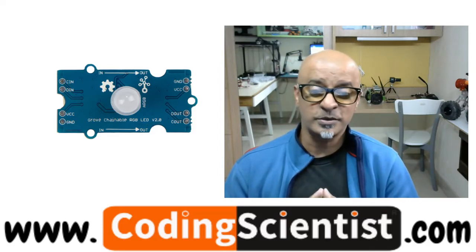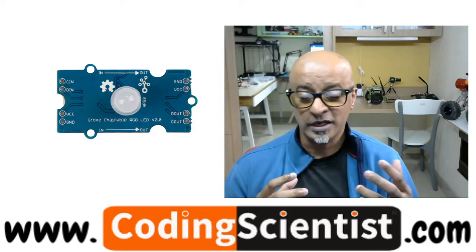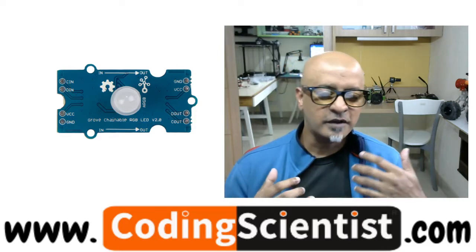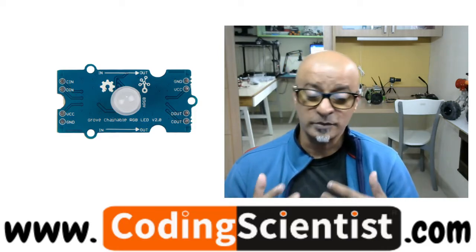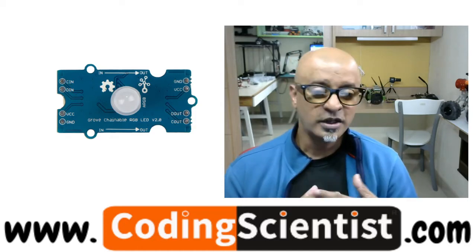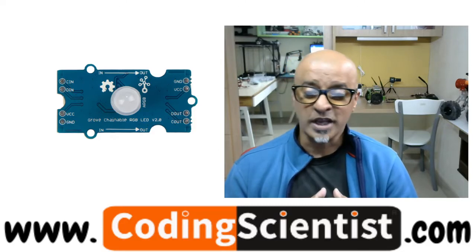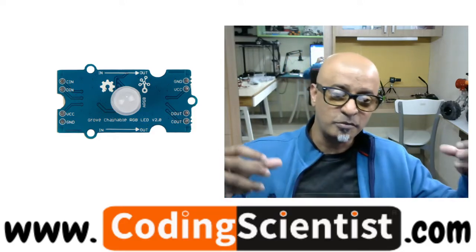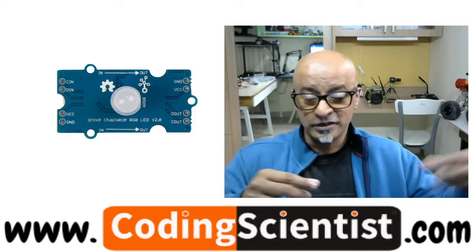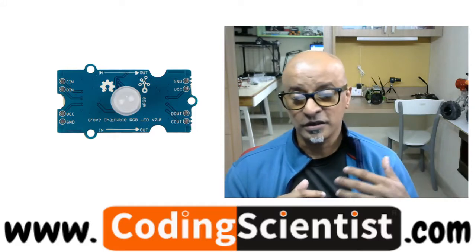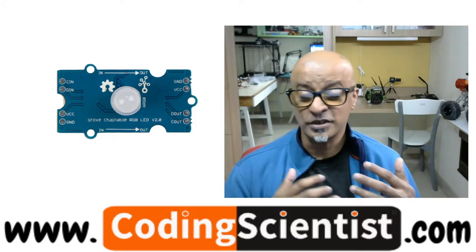It looks complex, but the good part is we have a library from Seeed Studio itself. This two wire transmission can be used to cascade additional chainable LEDs. You can connect in series multiple, hundreds, thousands, however many you want, just by plugging the wires. The built-in clock regeneration enhances the transmission distance.